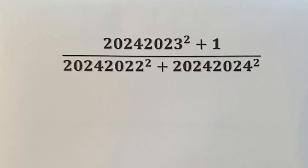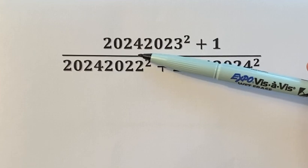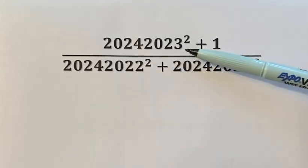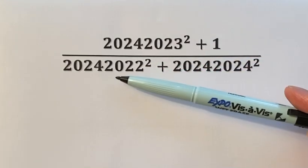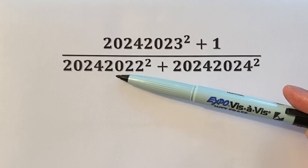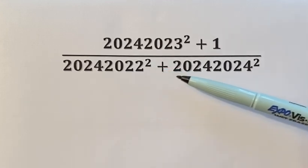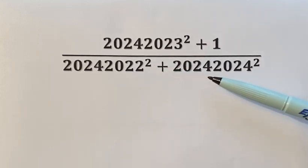Hello everyone. In this video, we are going to simplify a numerical expression using a simple technique. Here we have 20,242,023 squared plus 1 over 20,242,022 squared plus 20,242,024 squared.